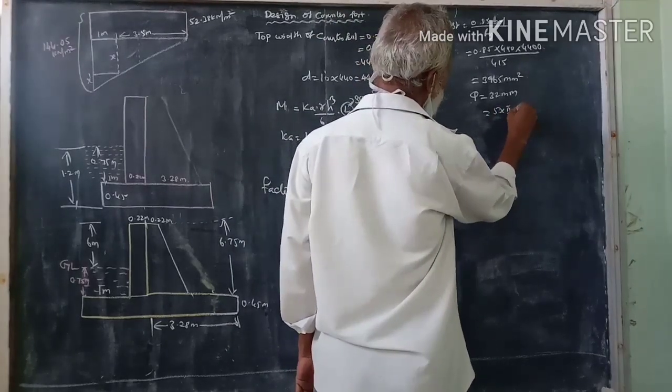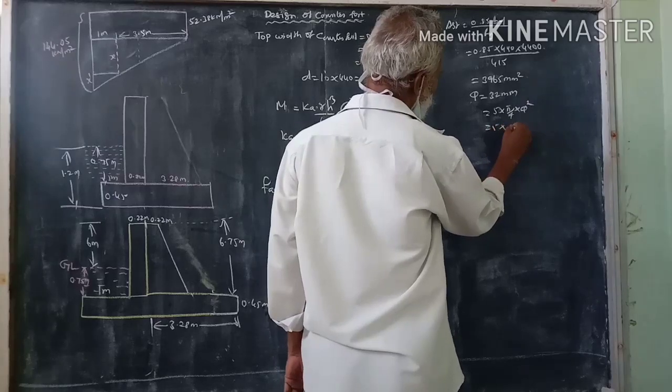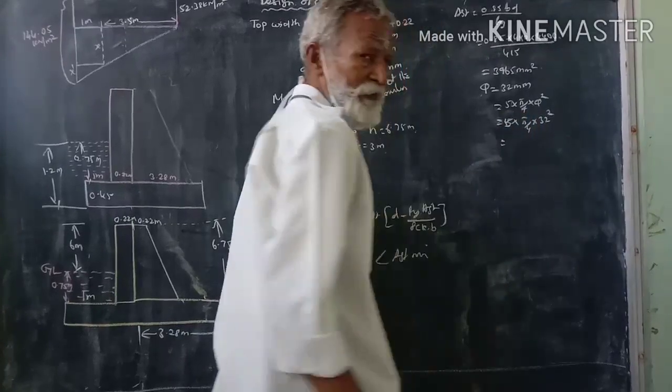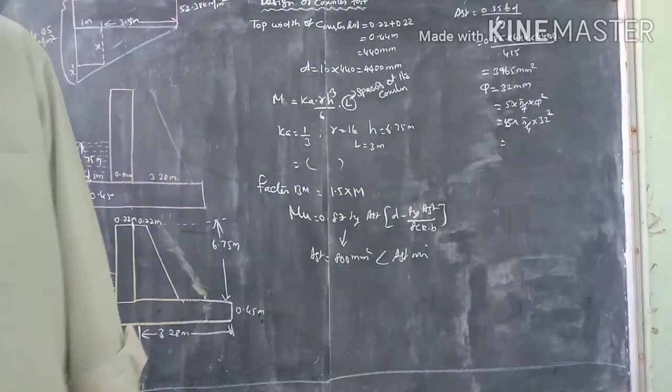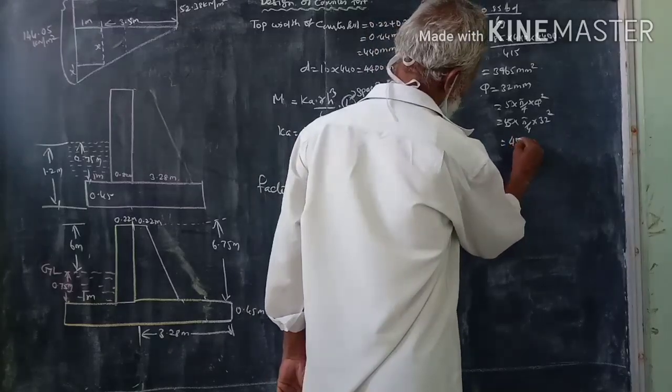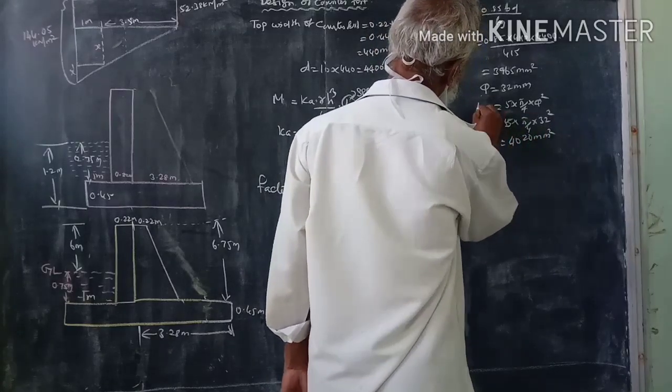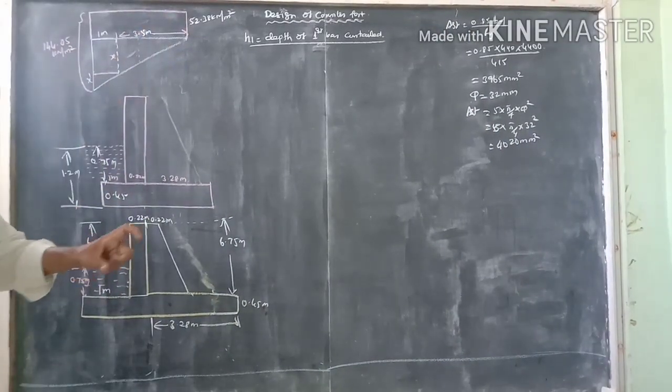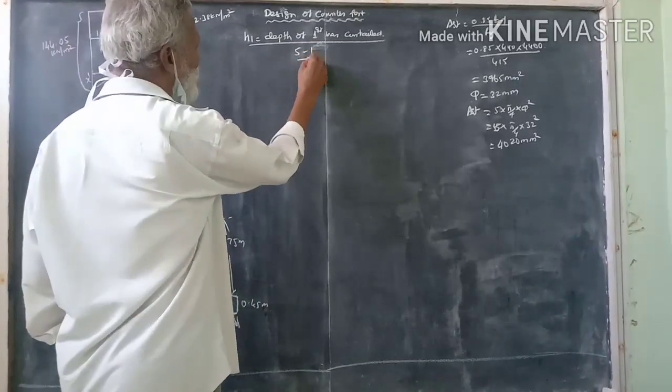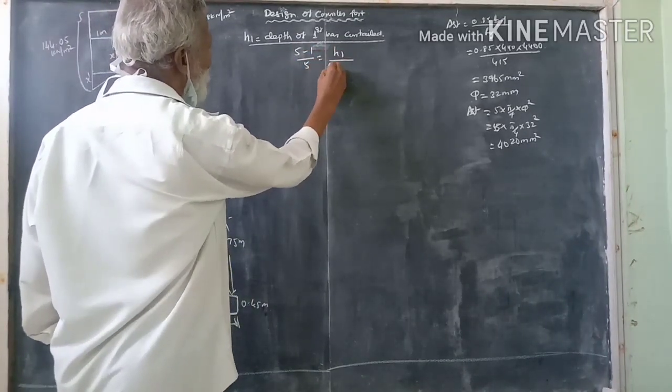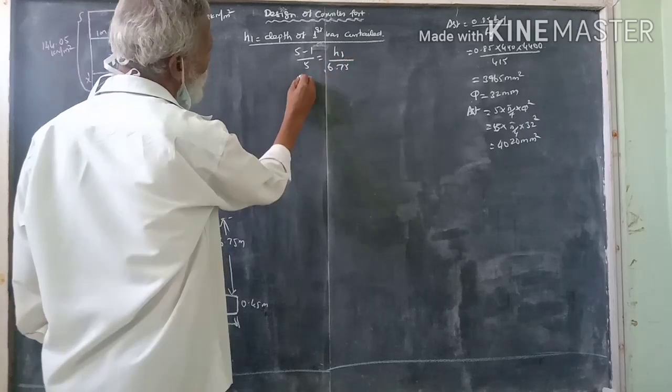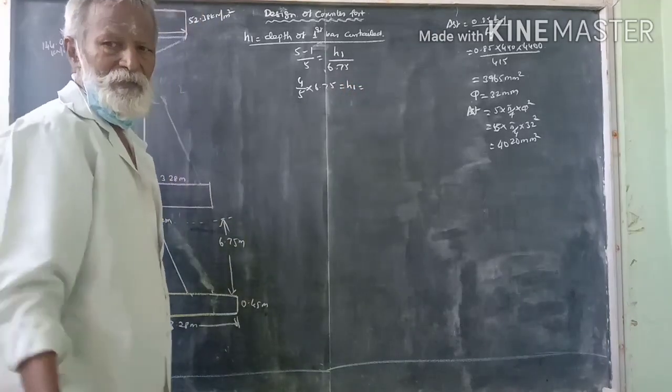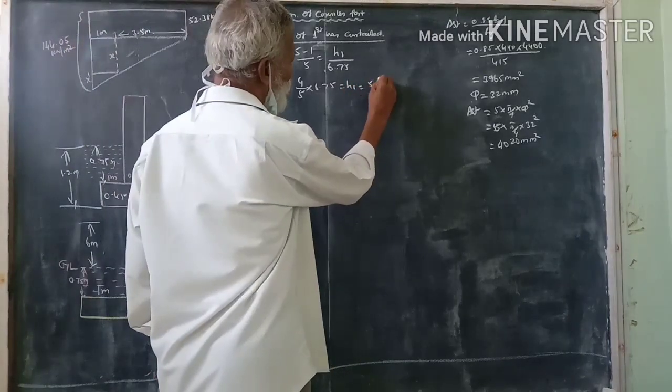For 5 bars design, 5 into pi by 4 into 5 square. For 5 into pi by 4 into 32 square, that's equal to 20. That's equal to 5 minus 1 divided by 5 into H1 divided by 6.75. Pi by 4 by 5 into 6.75 is equal to H1. 5 minus is 5.4 meters.